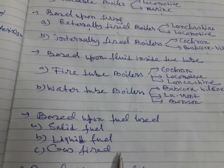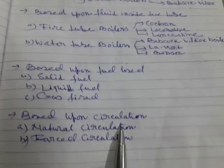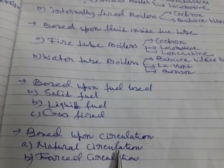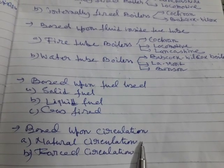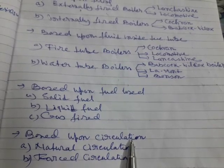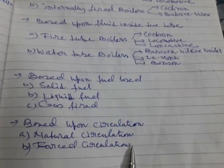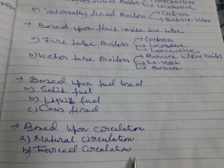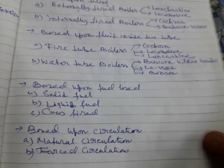Based upon circulation, there is natural circulation and forced circulation. Natural circulation means air enters the combustion chamber naturally and burning takes place. In forced circulation there are two types: forced draught and induced draught. A combination of both is called balanced draught, which will be discussed later.